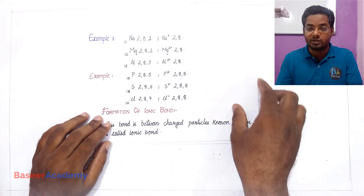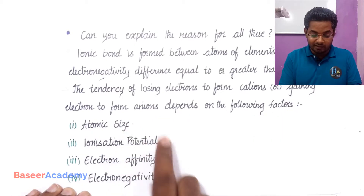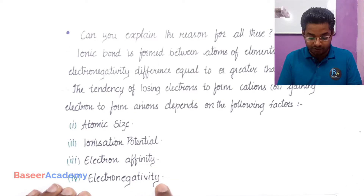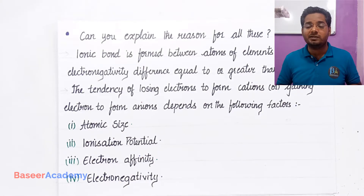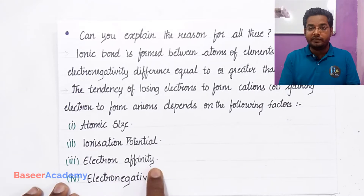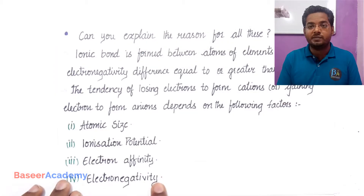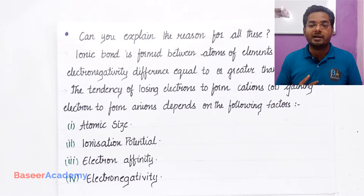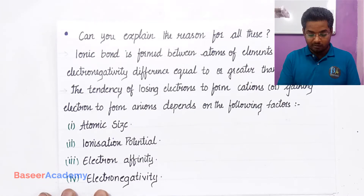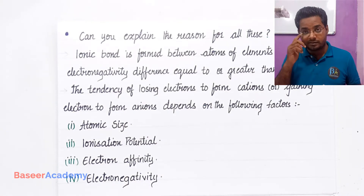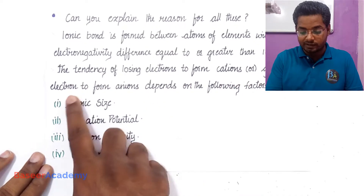Whether an atom loses electrons to form cations or gains electrons to form anions depends on the following factors: atomic size, ionization potential, electron affinity, and electronegativity. Atomic size is the size of the atom. Ionization potential is the minimum energy required to remove an electron from the outermost orbit. Electron affinity is the energy released when an electron is added to a neutral gaseous atom. Electronegativity is the tendency of an atom to pull the shared pair of electrons towards it, or the tendency of an atom to gain electrons and form a negative ion.